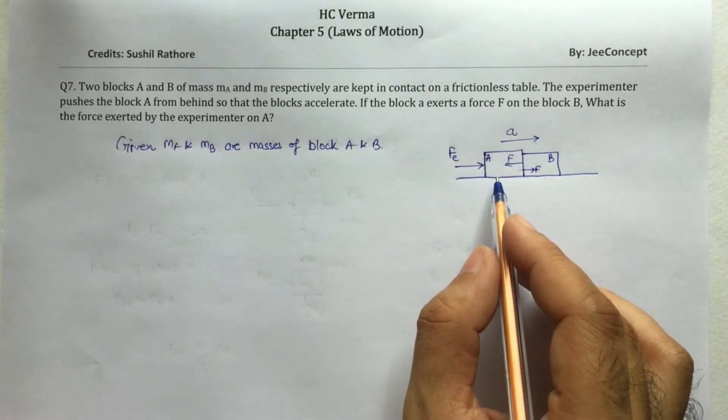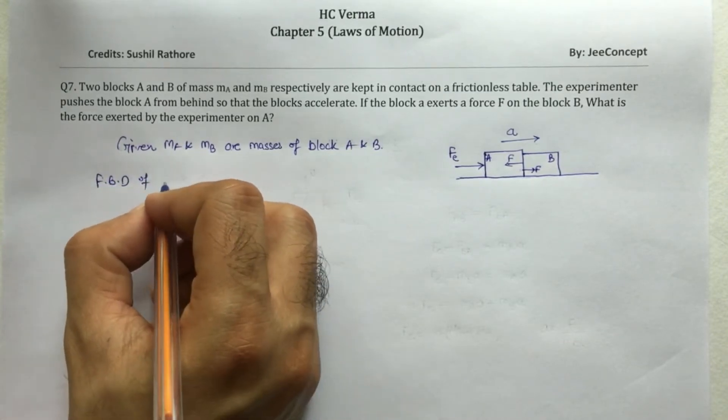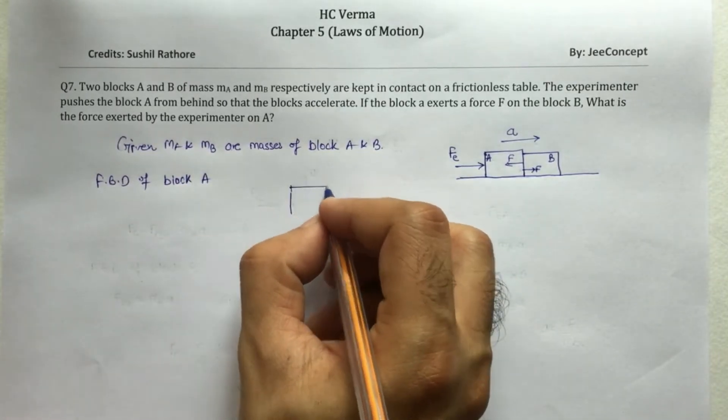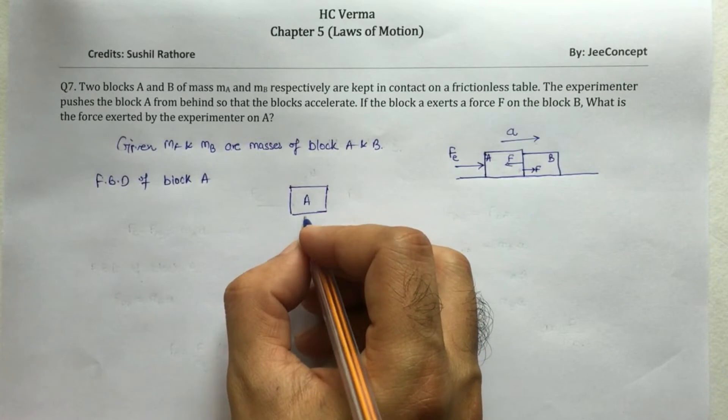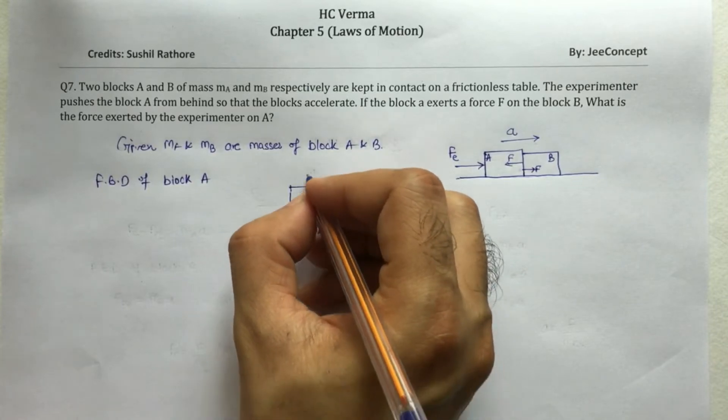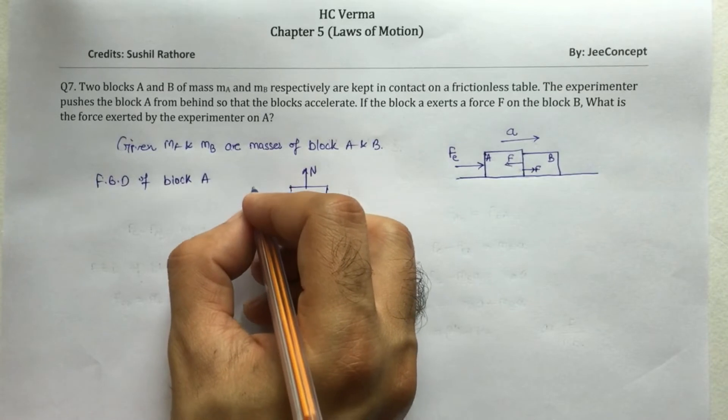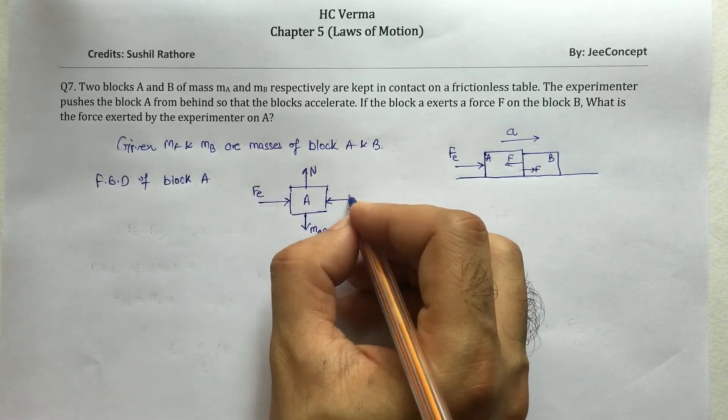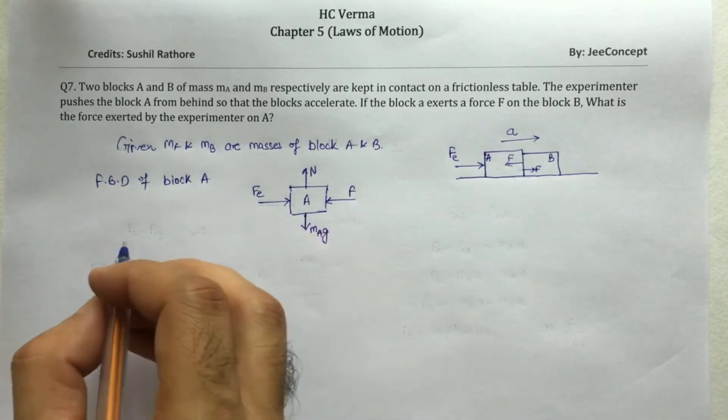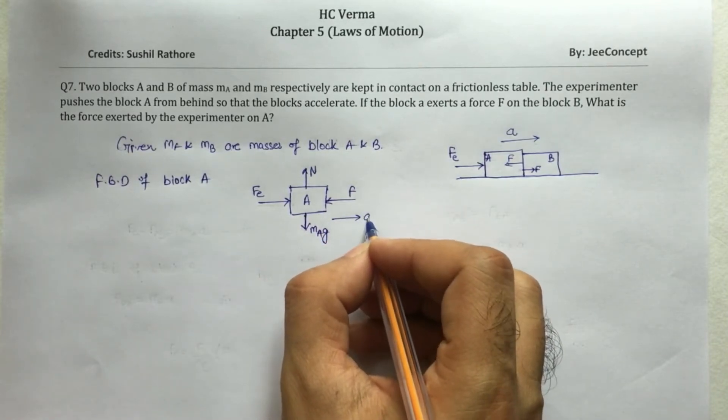Now first of all, we will draw the FBD of block A. So FBD of block A, so this is block A. There is always a downward force due to gravitation and there will be a reaction force in upward direction. The experimenter is applying force in the right hand direction and there is a force F exerted by A due to B. So now writing the equation, this block A is moving with an acceleration A in the right hand direction. So that means Fe minus F is equal to mass of A into acceleration.